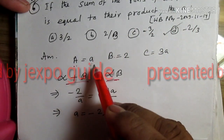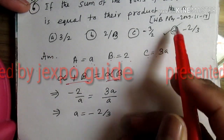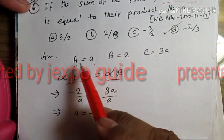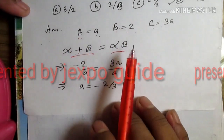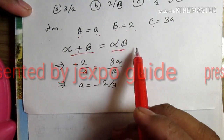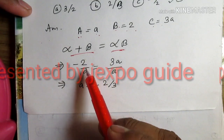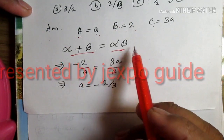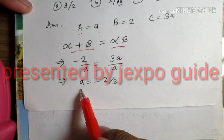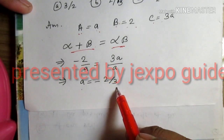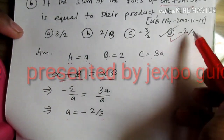A is equal to a, b is equal to 2, and c is equal to 3. Alpha plus beta is equal to minus b by a, and alpha into beta is equal to c by a, giving a equal to minus 3 by 2. The answer is option D.